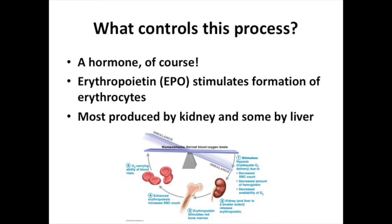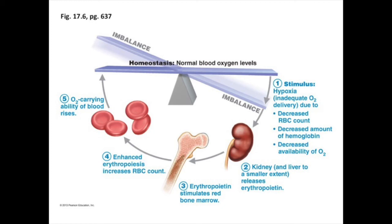Here we use a similar pathway with a hormone called erythropoietin, abbreviated EPO, which stimulates the formation of erythrocytes. Hormones are released when the body is out of homeostasis, and in this case, the homeostatic balance we're looking for is a normal amount of oxygen in the blood. Too little oxygen in the blood means you are hypoxic — this typically occurs when blood oxygen percent, as measured by a pulse oximeter, drops below about 90 to 92 percent.